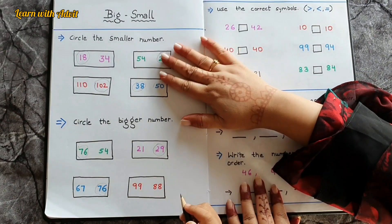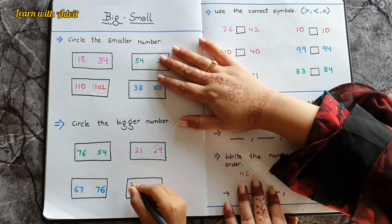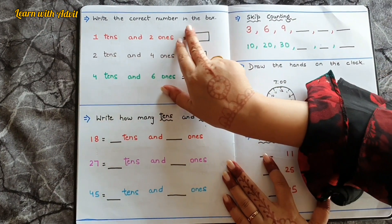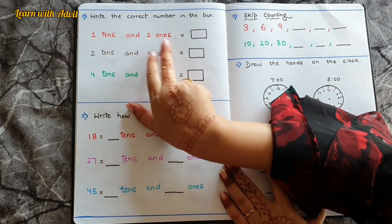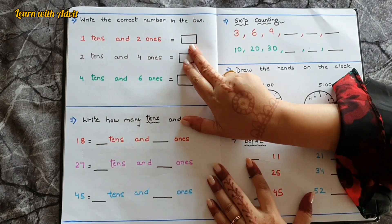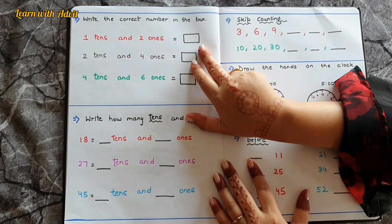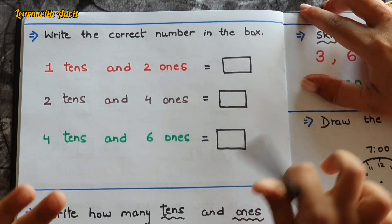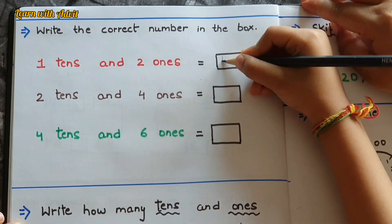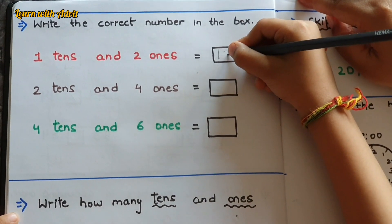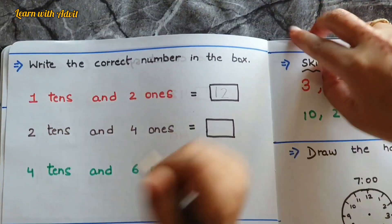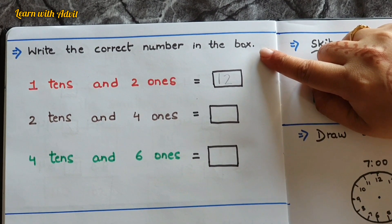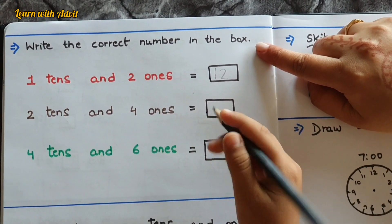99 or 88? 99 — very good! In this sheet, write the correct number in the box. Like 1 ten and 2 ones — what will be the number? 12 — yeah, right! Two tens and four ones? 24 — yes!